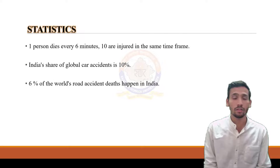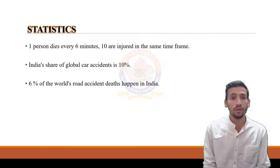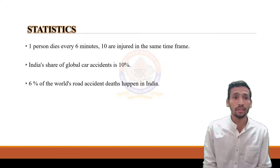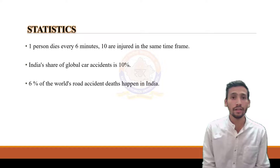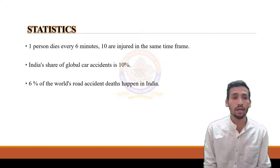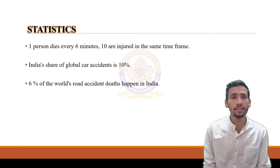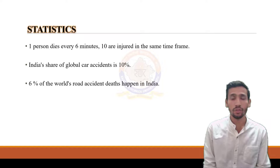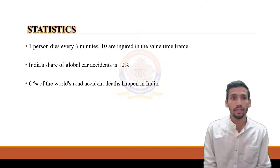The next slide covers statistics. According to a survey of accidents in India, one person dies every 6 minutes and 10 people are injured in the same time. India's share of global car accidents is 10%, accounting for 6% of road accidents that happen in India.